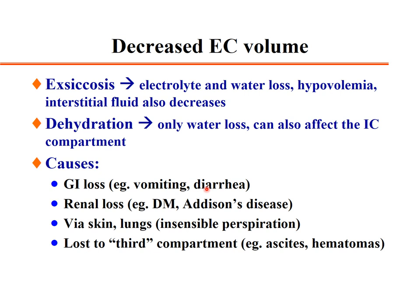Causes of extracellular volume loss include GI loss such as vomiting or diarrhea, renal loss in diabetes mellitus or Addison's disease, skin and lung insensible perspiration, or loss to a third compartment such as ascites or hematomas.